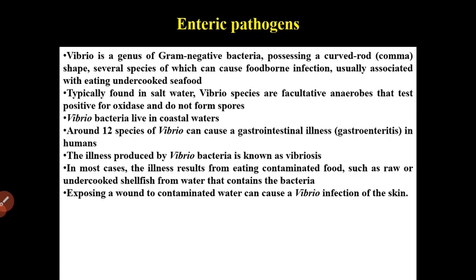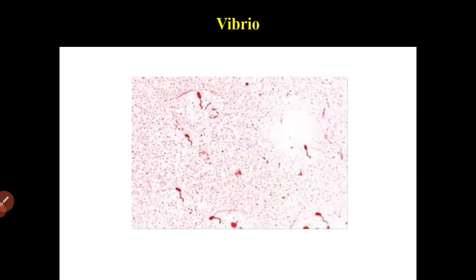Vibrio bacteria live in coastal waters. Around 12 species of Vibrio can cause gastrointestinal illness in humans or other infections. The illness produced by Vibrio bacteria is known as vibriosis. In most cases, the illness results from eating contaminated food such as raw or undercooked shellfish, or from exposing a wound to contaminated water, which can cause a Vibrio infection of the skin.